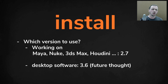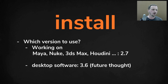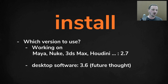As for which version to install: if you're already working inside a software like Maya, you'll have to use Python 2.7 since it's already installed with it. Maya, Nuke, 3ds Max, and Houdini all have Python 2.7 built in, so the script editor will automatically use that version. Even for desktop applications tightly integrated with these tools, it can be good to stay at 2.7. But if you're more of a desktop app writer, it may be better to go to 3.6 since it's the future of Python and DCC packages will likely move to the newer version soon.